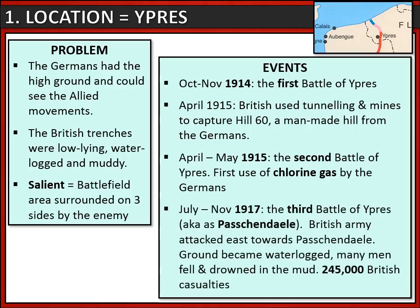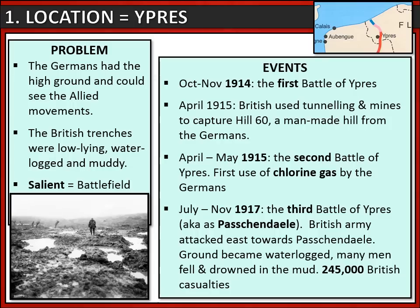We also need to know about the third battle of Ypres that took place in 1917, later on in the war. This is also known as Passchendaele. The reason we need to know about this particular battle is that it was fought under extreme conditions. There'd been a lot of rain and the ground became waterlogged and incredibly muddy. In fact, many men fell and drowned in the mud and the British had a total of 245,000 casualties.